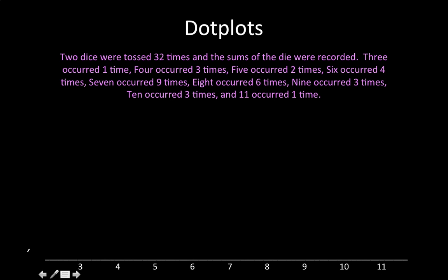Two dice were tossed 32 times and the sums of the die were recorded. Three occurred one time, so we put one X next to the three. Four occurred three times. Five occurred two times, six occurred four times.